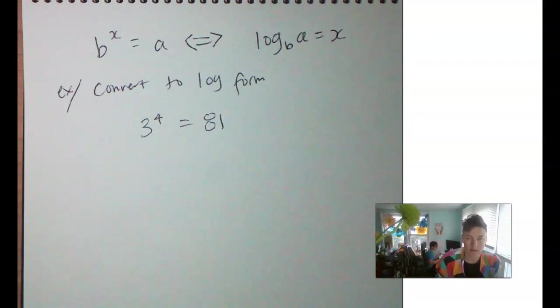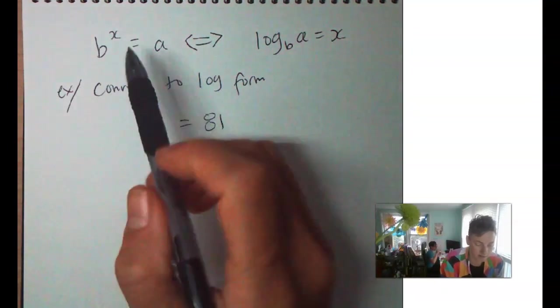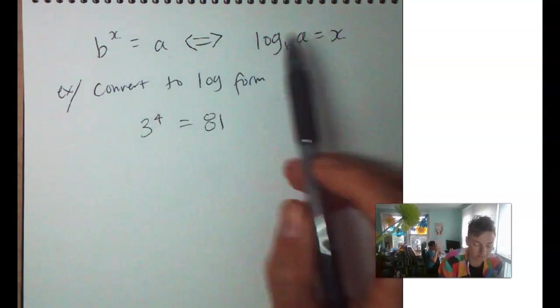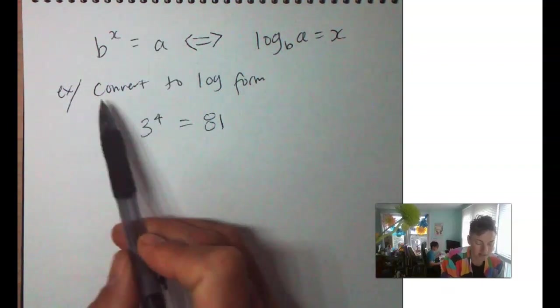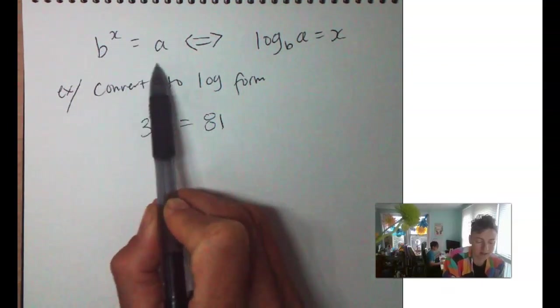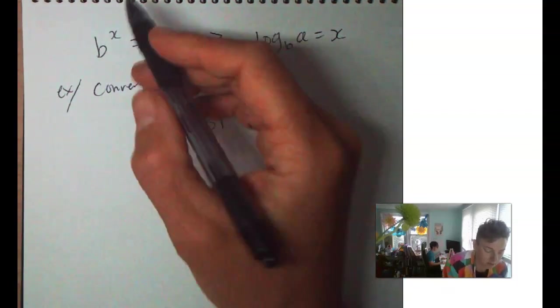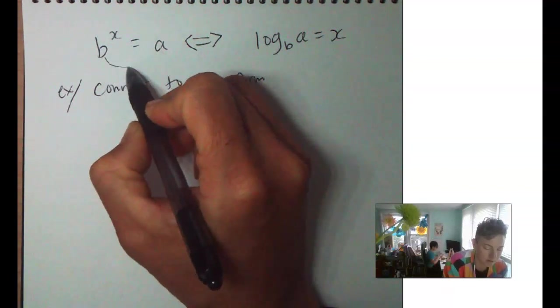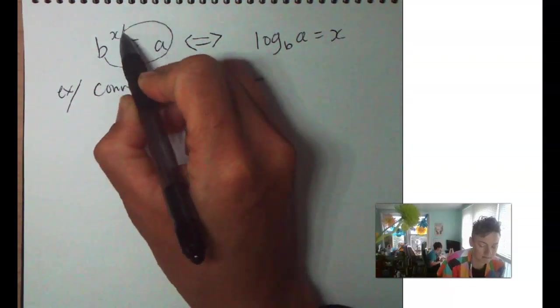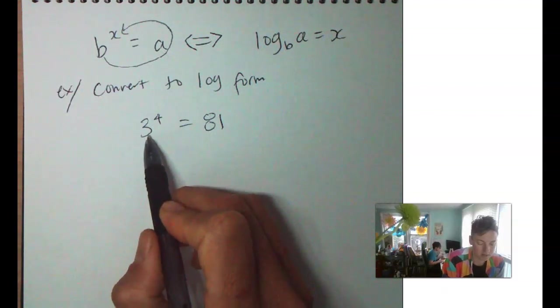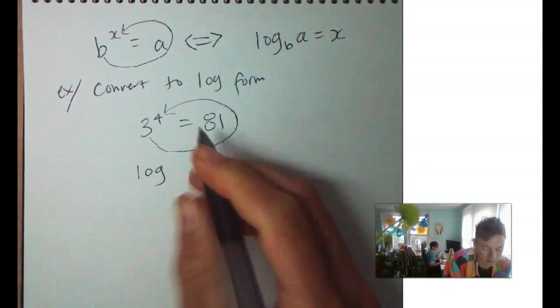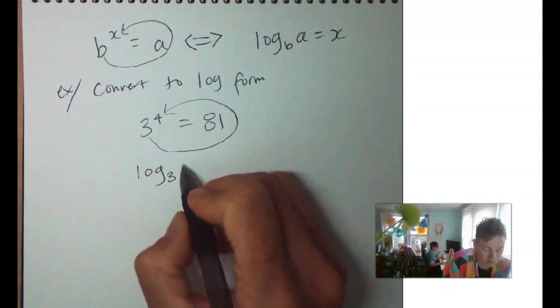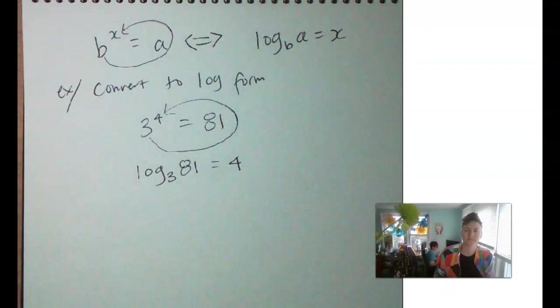So, I call this the loop swoop. We're going to convert from b to the x equals a, or convert this to log base b of a equals x. So, we're going to say log base b of a equals x. That's where my loop swoop comes from. Log base b of a equals x. So, we're going to say log base 3 of 81 equals 4. Pretty cool, right?